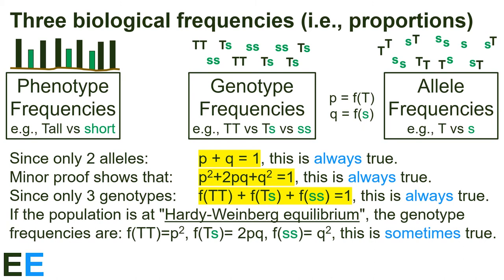Finally, if the population is at Hardy-Weinberg equilibrium, those last two results line up, and the genotype frequencies are: frequency of TT equals P squared, frequency of Ts equals 2PQ, and frequency of ss equals Q squared. This is only sometimes true, however. Students often think you can always use these equations to predict genotype frequencies from just P and Q, but you can only use them when you know the population is at Hardy-Weinberg equilibrium.